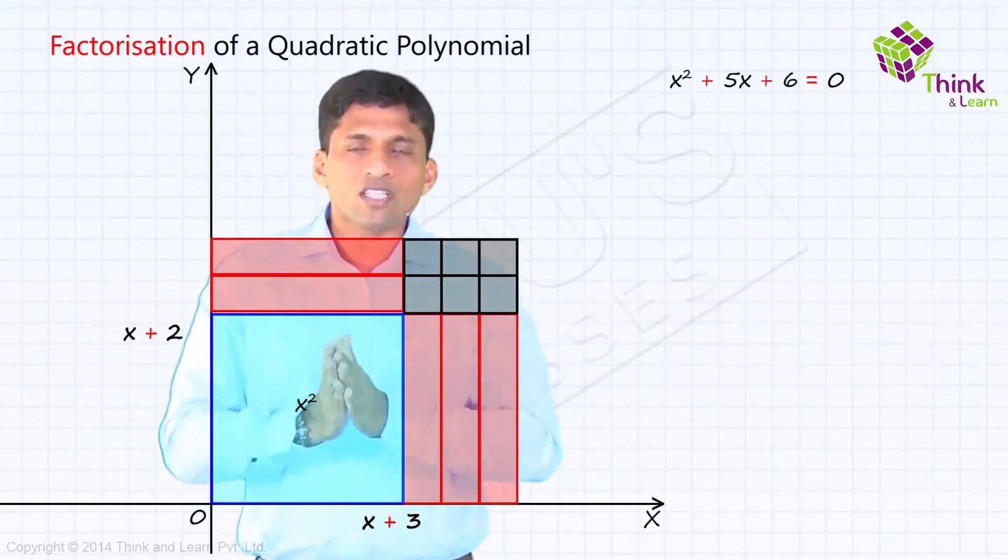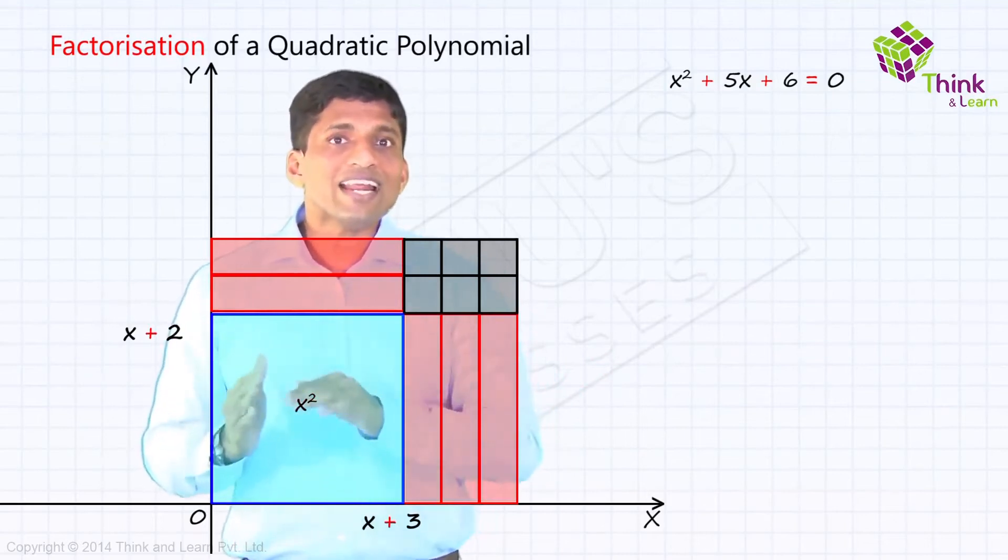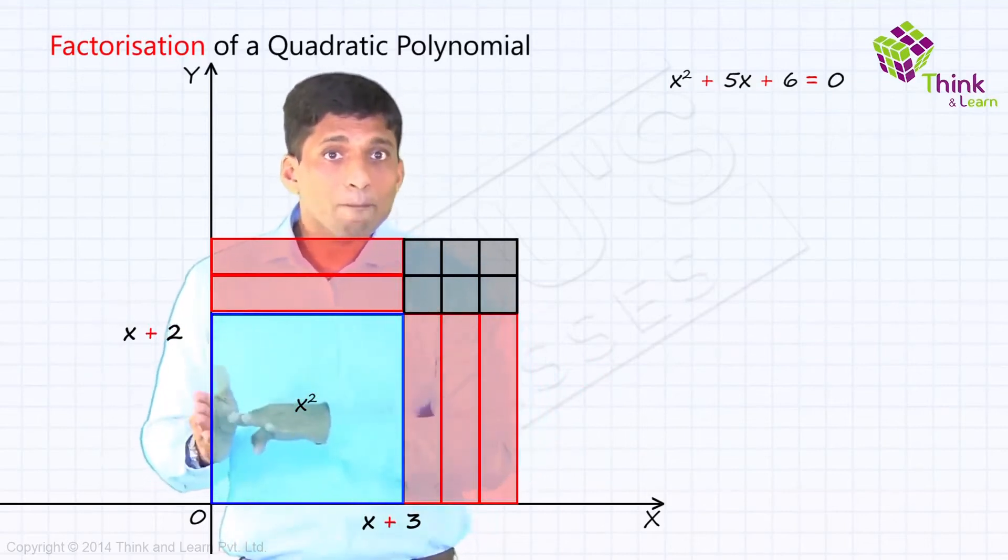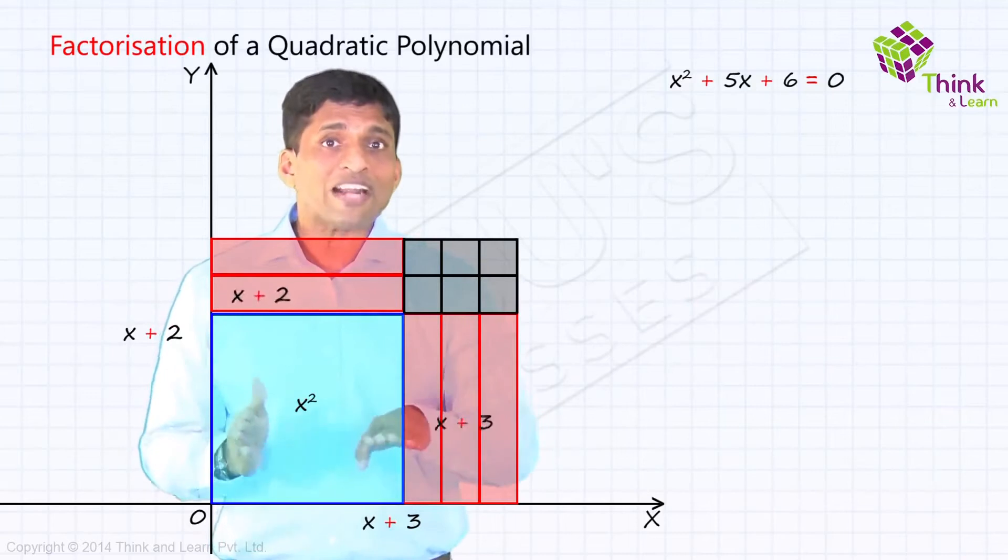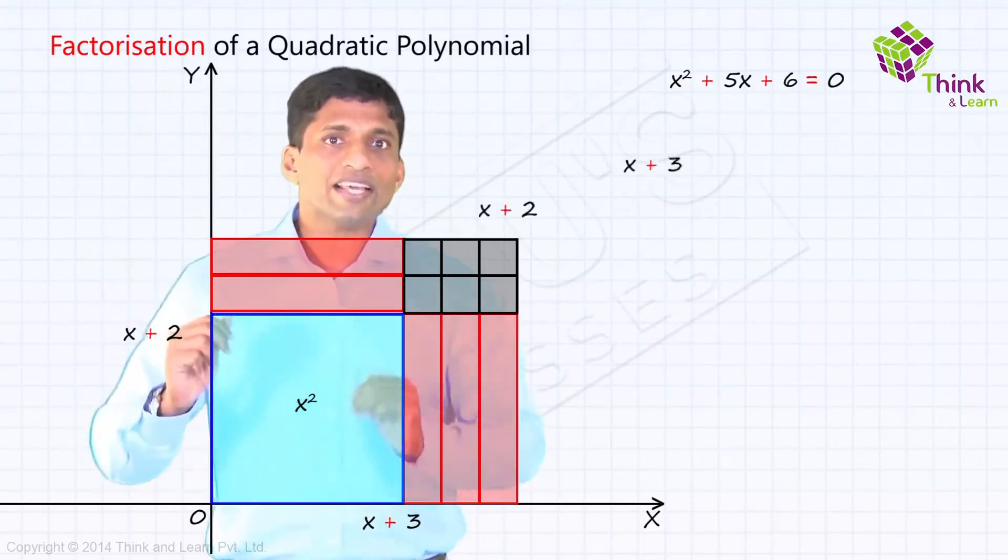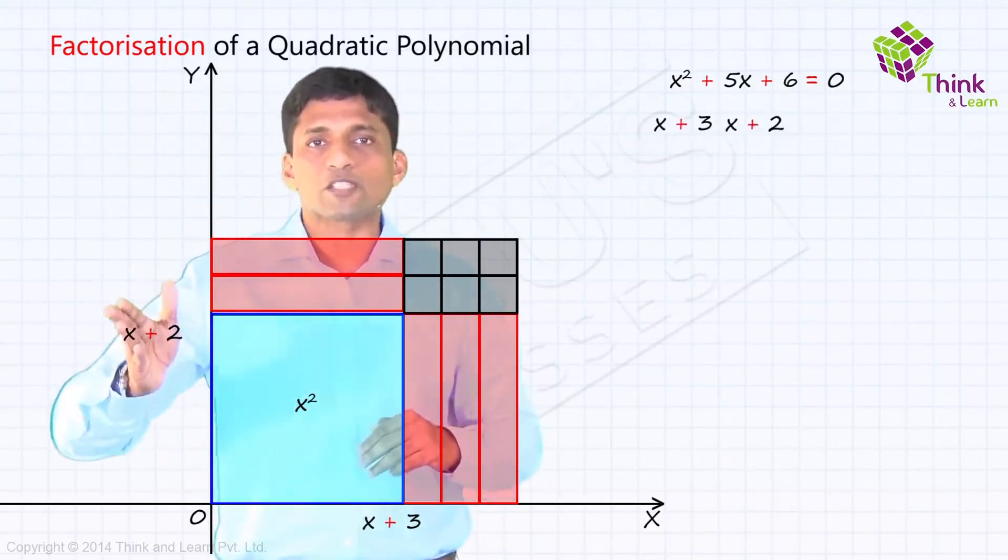But when you bring all of them together, we are still getting x square plus 5x plus 6. But we are factorizing it as length and breadth. Length is x plus 3 and breadth is x plus 2.